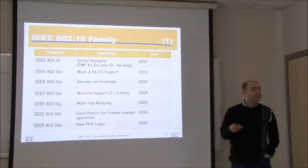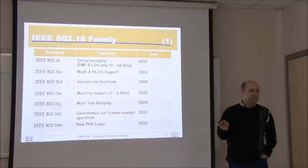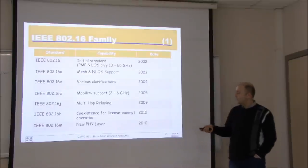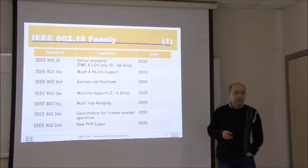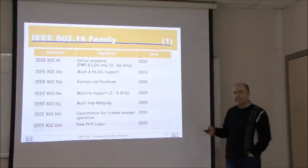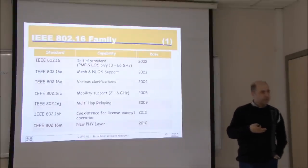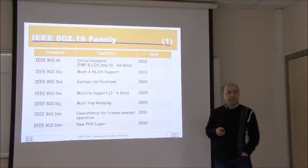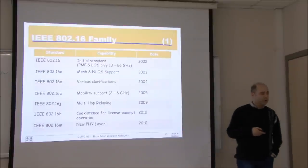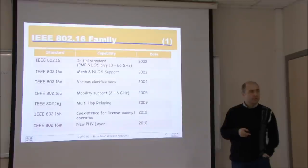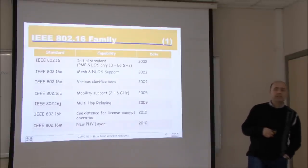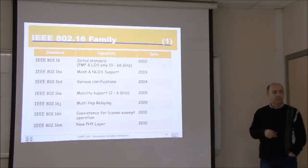The introduction of 802.16J cut down the interest in the mesh mode. I personally believe mesh mode was a much better design, but 802.16J was a much easier implementation — sometimes easier wins. In 802.16H, coexistence for license-exempt operation was also defined, borrowing some ideas from cognitive radio. And 802.16M introduced a new physical layer based on MIMO. 802.16M was the first ever standard to fulfill the 4G requirements — WiMAX IEEE 802.16M was the first 4G technology, allowing up to 1 Gbps.